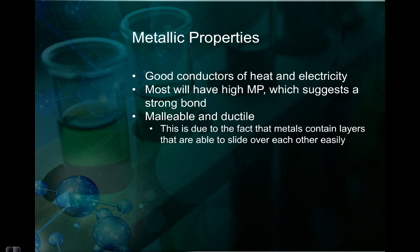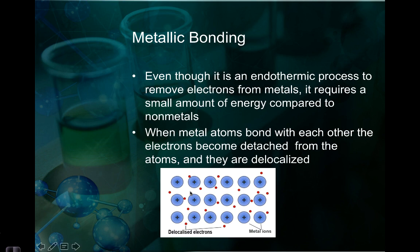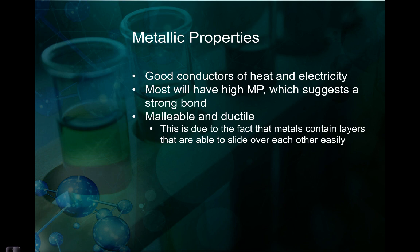Some of the things that we know about metals: we know that they're good conductors of heat and electricity. We know that they have high melting points — most of them do — that's just a very strong bond. We also know that they're malleable and ductile. Malleable means it'll bend under pressure. Ductile means I can pull it into a wire. This is because when we have this structure, it actually has layers upon layers upon layers, and they're able to slide over each other pretty easily. That's why it's malleable and ductile.